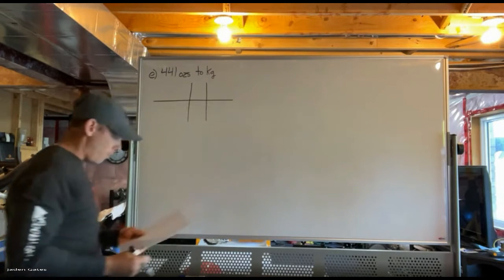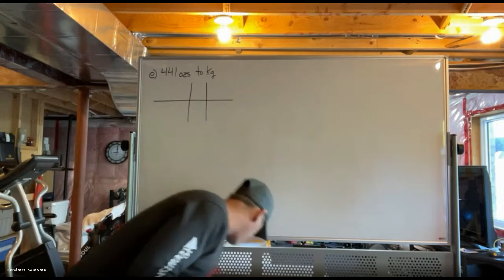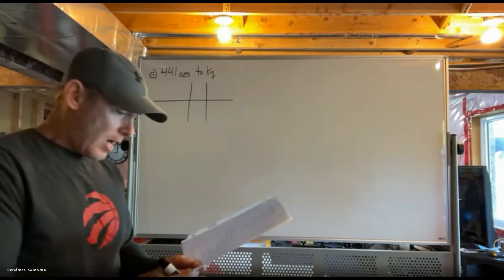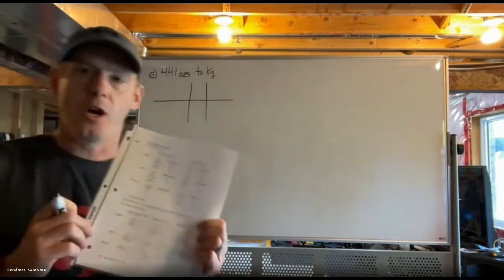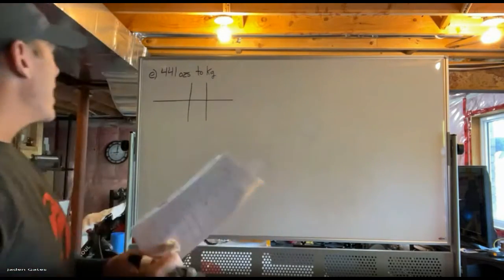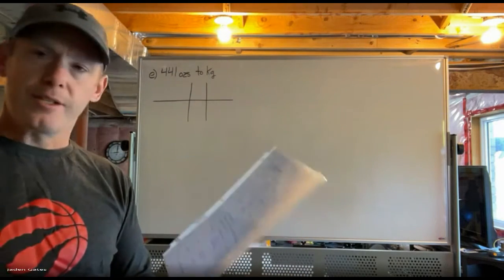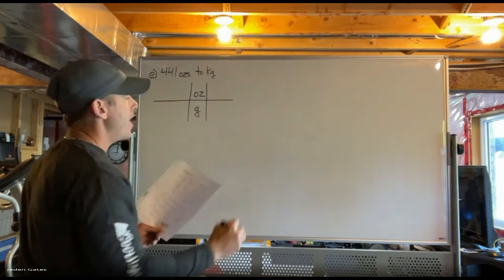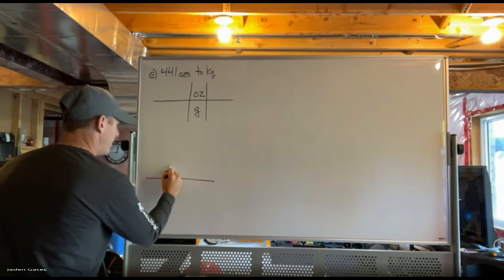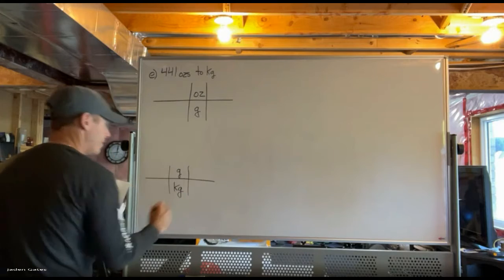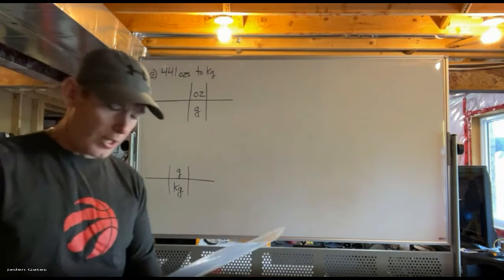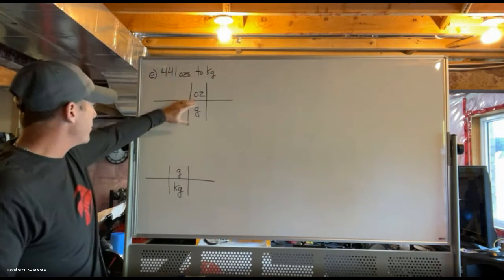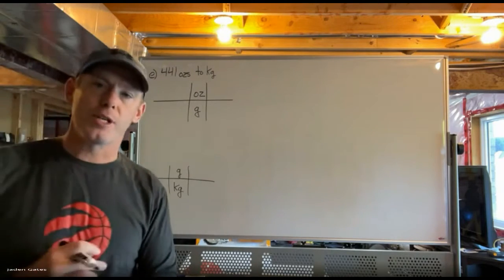I set up a little table just like before. Now here's the problem — I want to go ounces to kilograms, but if I look on my sheet, there is no ounces-to-kilograms conversion. What I can do, though, is convert ounces to grams, and then flip those grams to kilograms. So we can't do it in one step; we need two steps, doing the same process twice.